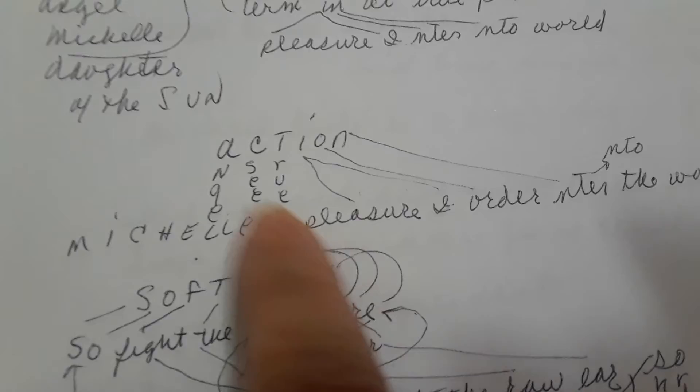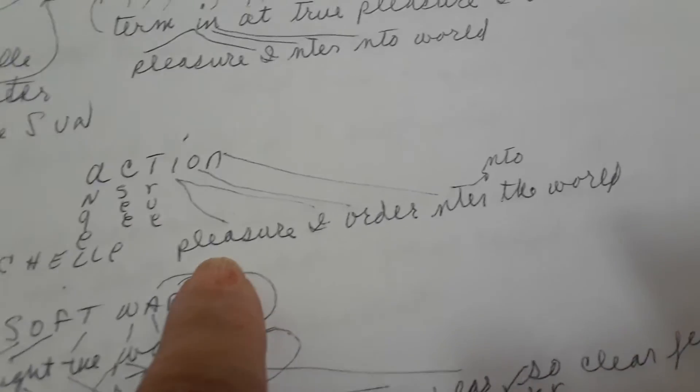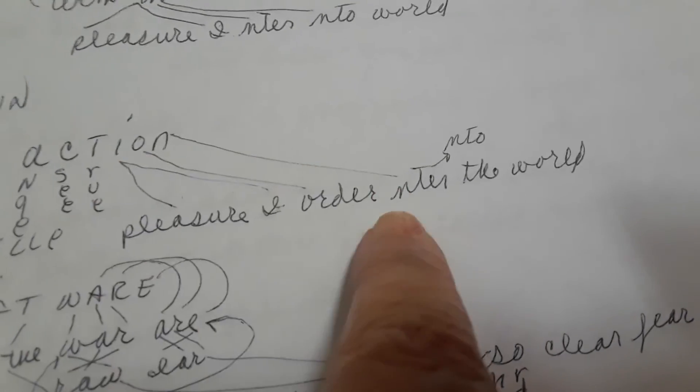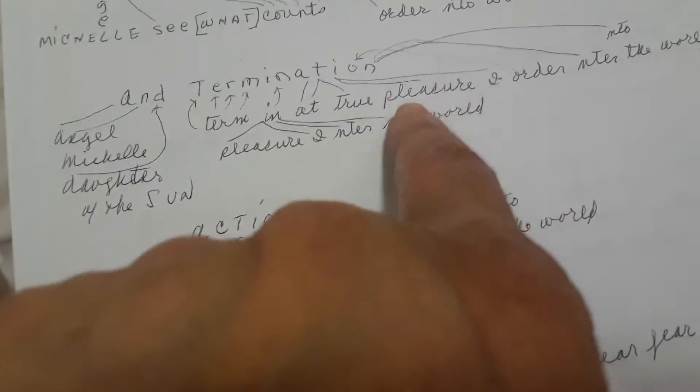Action. Angel Michelle, C for see, T for true, I for pleasure, I for I, O for order, N for enter. Angel Michelle, see true pleasure, I order into the world. That's a clear way of saying that.